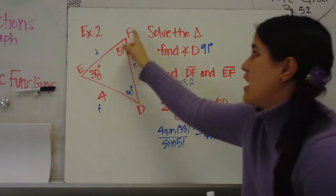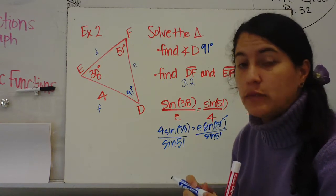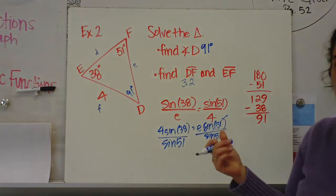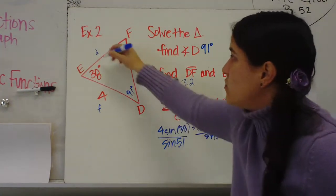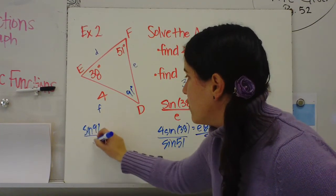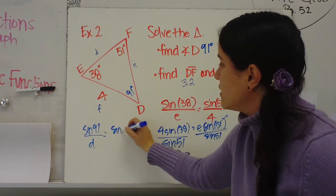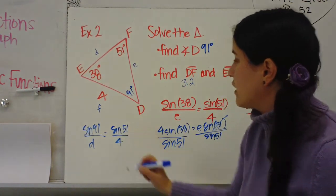Then we need to find length d. We can't use the Pythagorean theorem because this is not a right triangle. It's an oblique triangle. So I need to set up using my law of sines. 91 is across from d. So sine of 91 over d. And then you could use either one. I'm just going to use sine of 51 over 4 again.